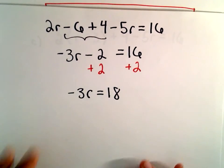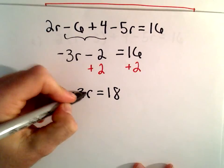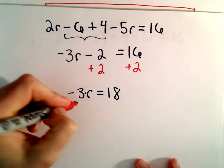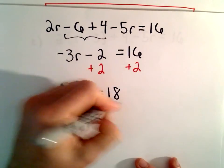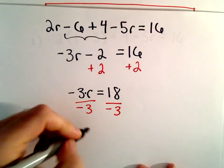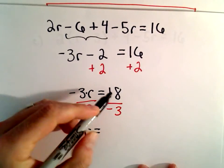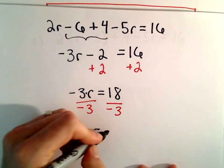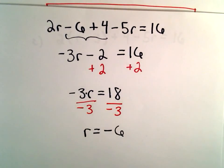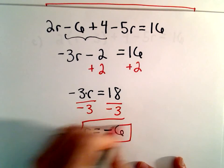And to get the r by itself, since we're multiplying by negative 3, what we'll do, we'll just divide both sides by negative 3. So negative 3 over negative 3 is 1. We're left with r on the left. A positive over a negative will give us a negative. 18 over 3 is 6. So our solution will be r equals negative 6.